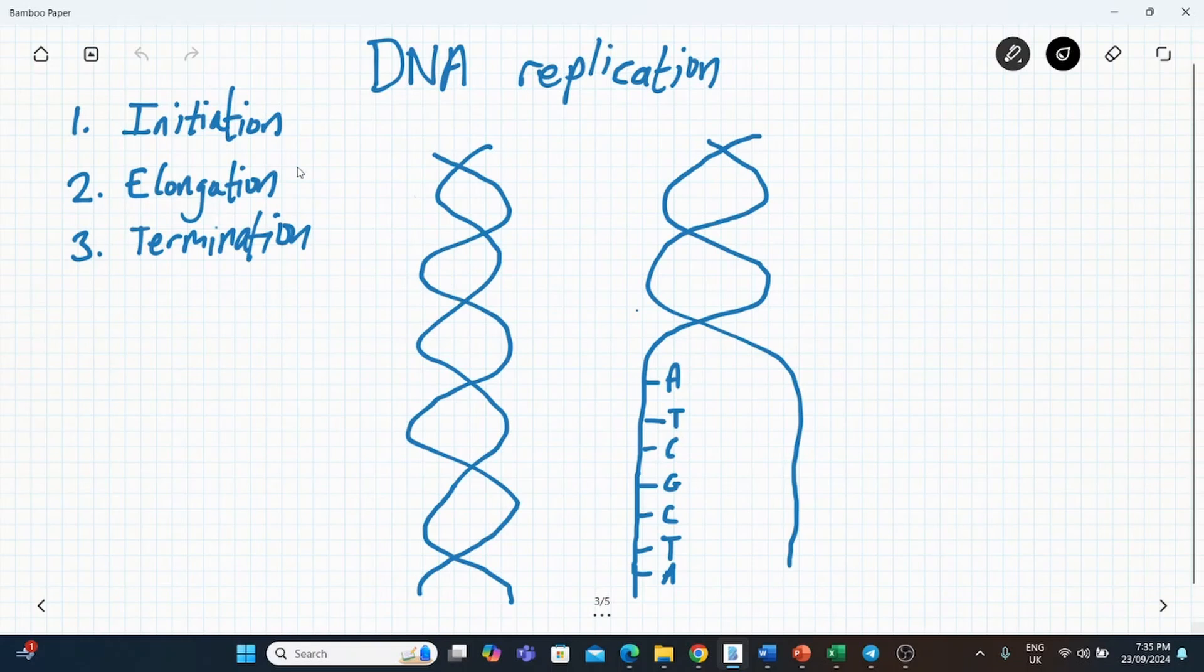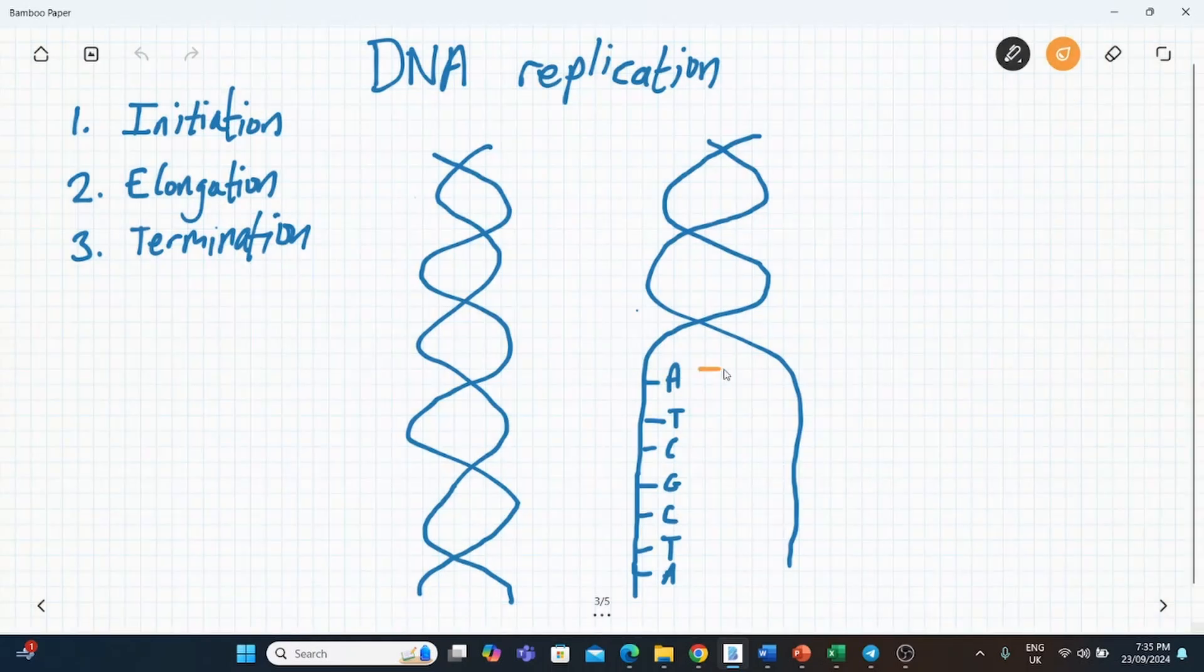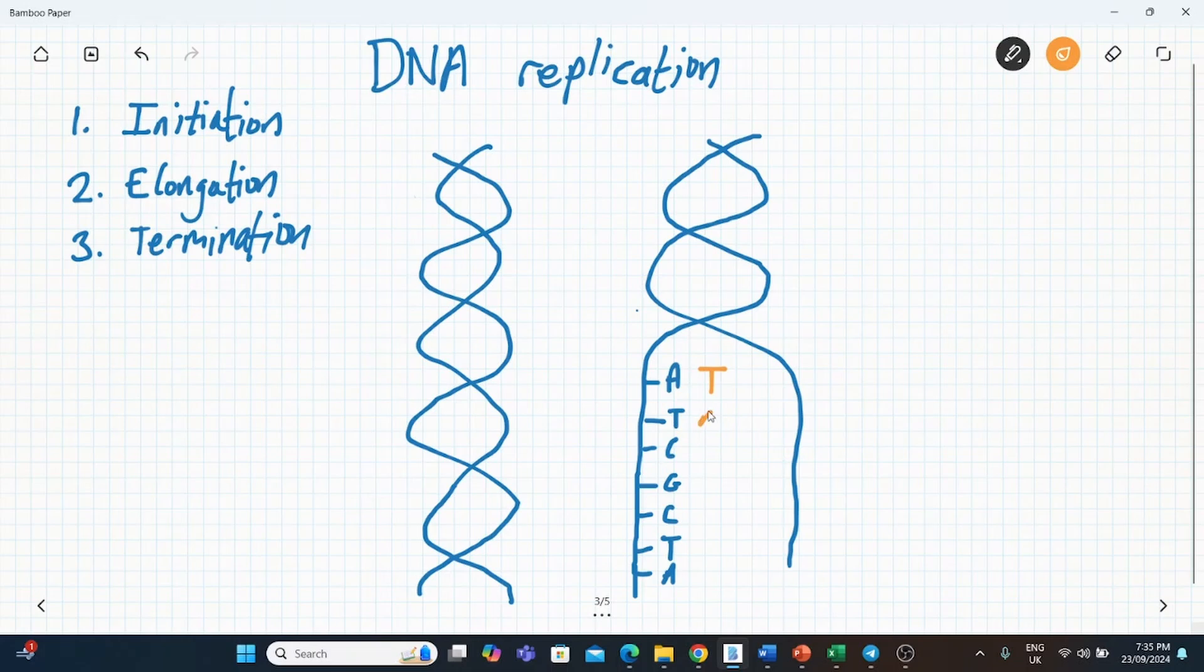Then you've got elongation. And in elongation what's occurring is bases have to be added down here. So wherever you have an A, you have a T. Wherever you have a T, you have an A. Wherever you have a C, you have a G. C, G, A and T. So this is a complementary strand of DNA being made.